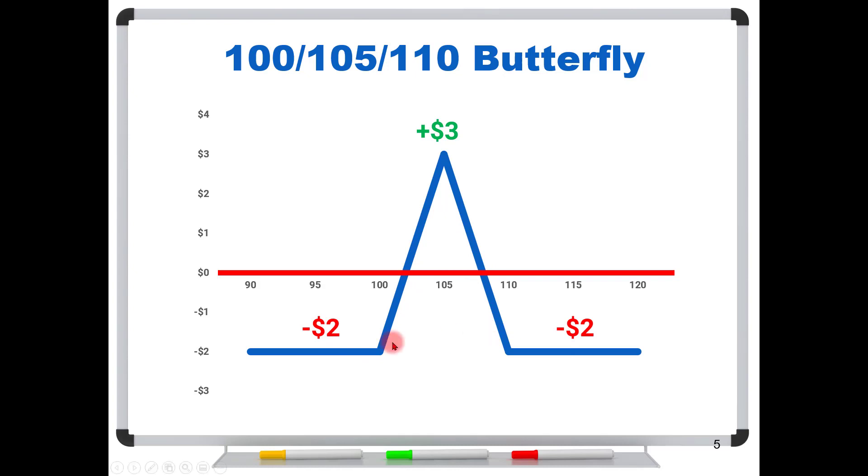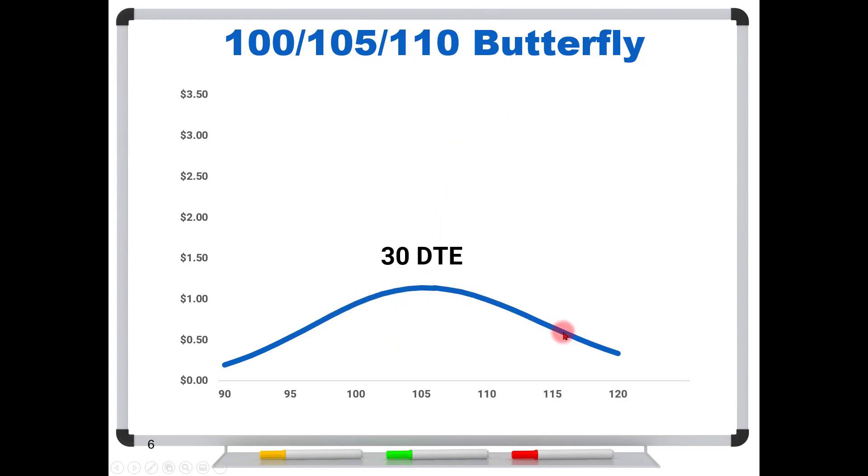But unfortunately, traders see graphs like this. This is usually what's posted on books and websites and possibly even your broker's platform. But they're just trying to show you the general nature of the strategy and what's going to happen right on the expiration bell. But today, let's say maybe with 30 days to expiration, this is not what your graph looks like. This same strategy, the 100, 105, 110 butterfly, maybe with 30 days, will look like this.